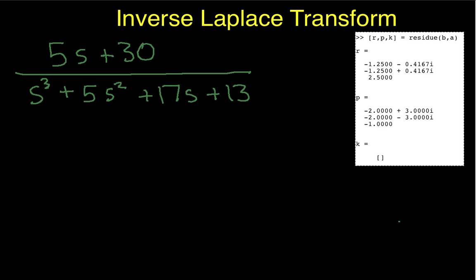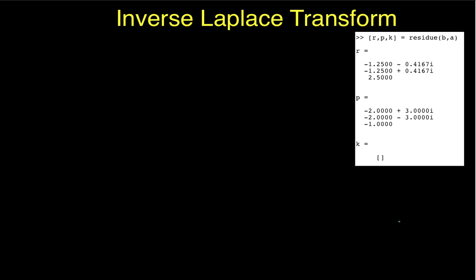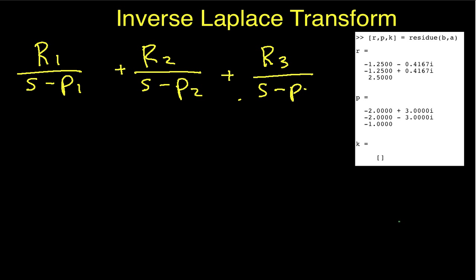Okay, so we've got our values for our partial fraction expansion. And now, we need to try to make some sense out of this, and figure out what this actually is giving us. So, let's look at, again, we have R1 over s minus P1 plus R2 over s minus P2 plus R3 over s minus P3.